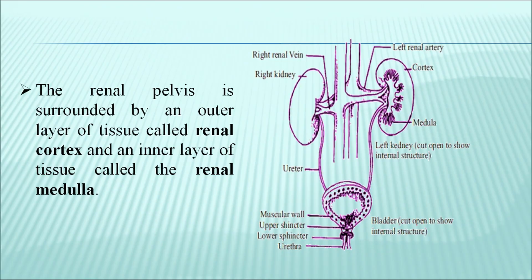The renal pelvis is surrounded by an outer layer of tissue called the renal cortex and an inner layer of tissue called the renal medulla. The microscopic structure of the kidney includes a large number of minute tubular structures called nephrons, located partly in the renal cortex and partly in the renal medulla. They form urine and drain it ultimately into the pelvis of the kidney, from where the ureters transport the urine to the urinary bladder. There are about 1 million nephrons in each kidney, which filter about 180 liters of fluid per day, most of which is reabsorbed.